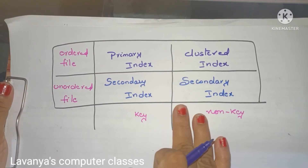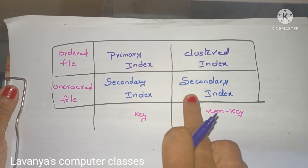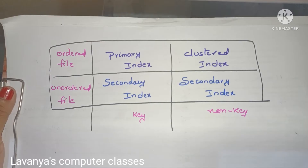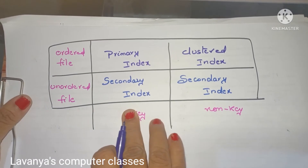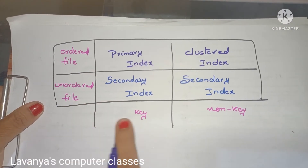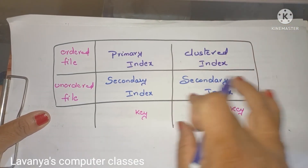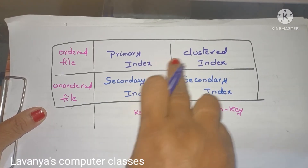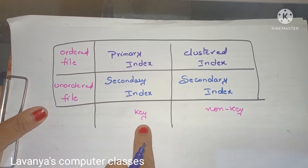For easy identification, I have written a table showing the types of indexing: primary index, secondary index, and clustered index. To remember these, we use the concepts of ordered file, unordered file, key, and non-key. These help differentiate the types of indexing.